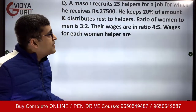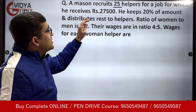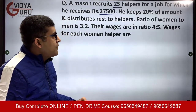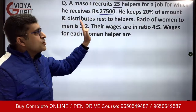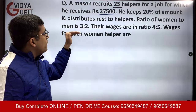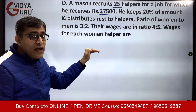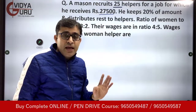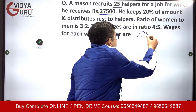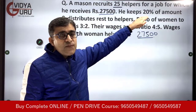A mason recruits 25 helpers for a job for which he receives Rs. 27,500. He keeps 20% of the amount and distributes the rest to the helpers. The ratio of women to men is 3 is to 2, and their wages are in the ratio 4 is to 5. We have to find the wages for each woman helper.